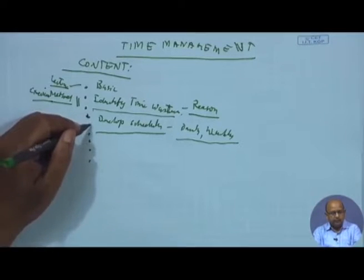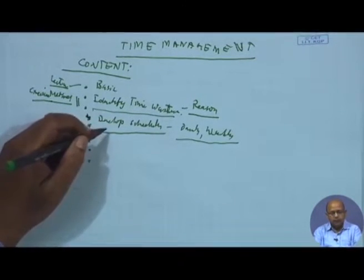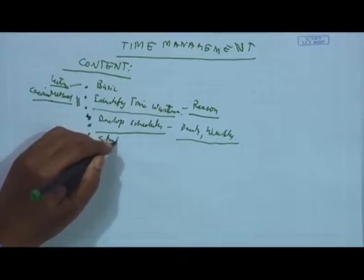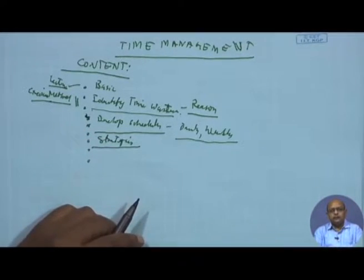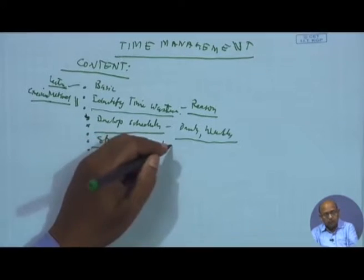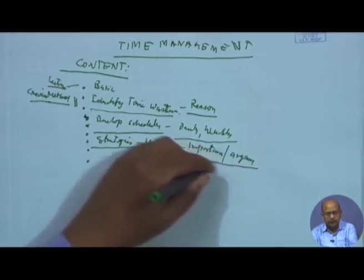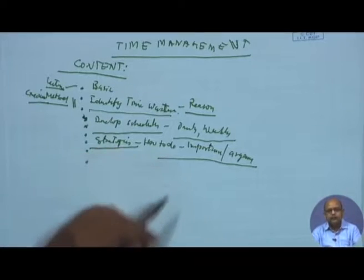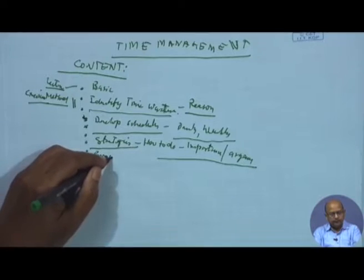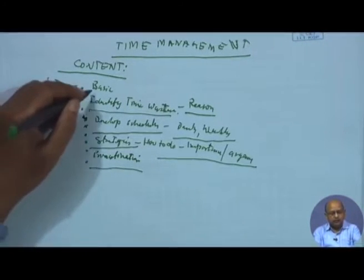If you want to be really productive, you must develop your own schedules based on job requirements. You must learn how to develop good schedules on a daily or weekly basis to plan your activities. You also need to develop a strategy — this is what we know as time management strategies — how to do certain things in terms of importance and urgency. The trainer will explain the concept of importance and urgency in time management.